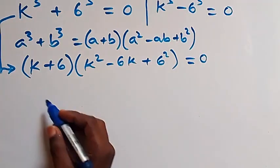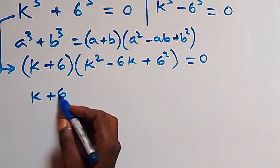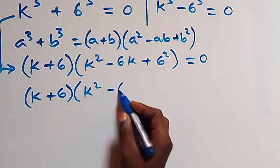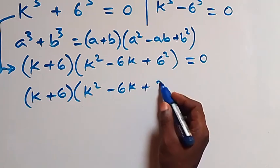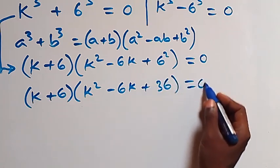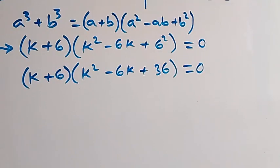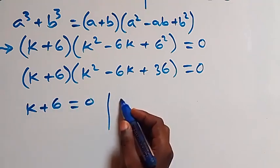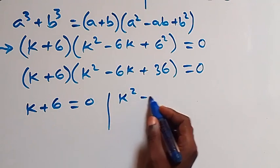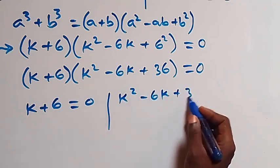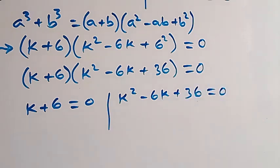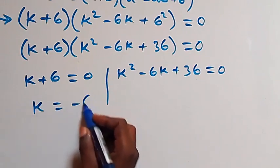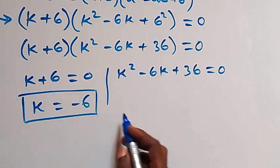From here we have two cases: k + 6 = 0, or k² - 6k + 36 = 0. On this side, we have k equals minus 6, which is a real solution.